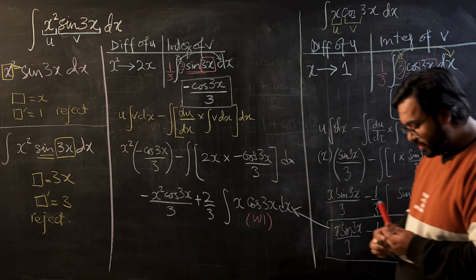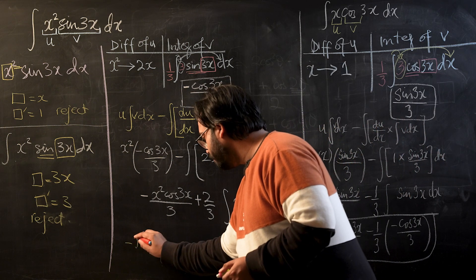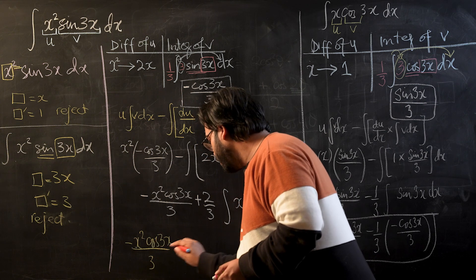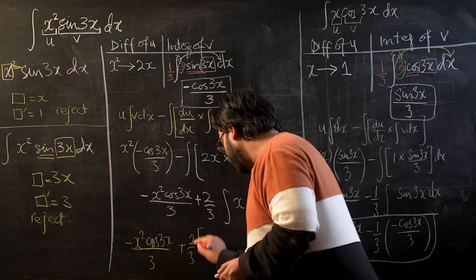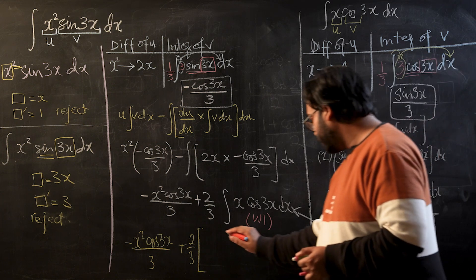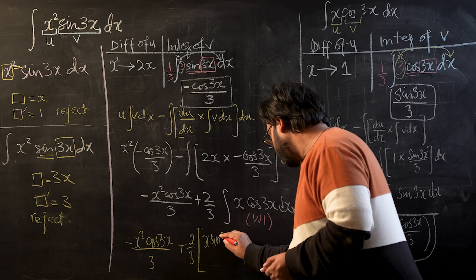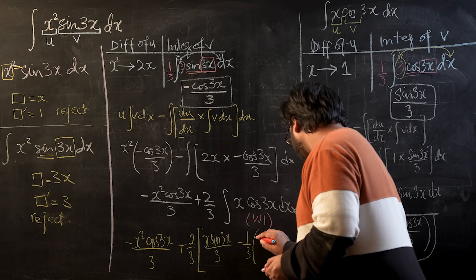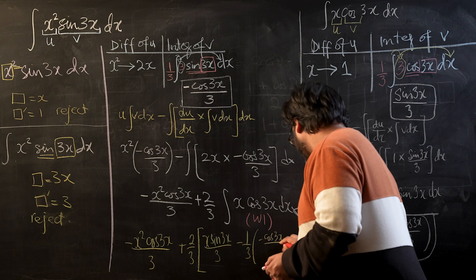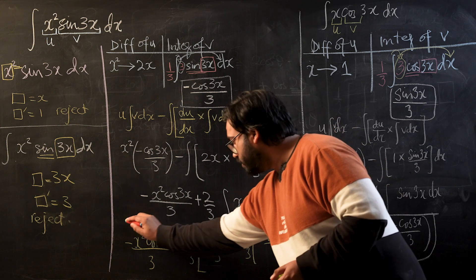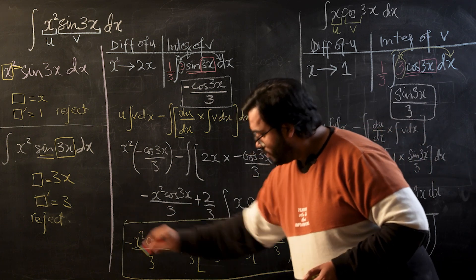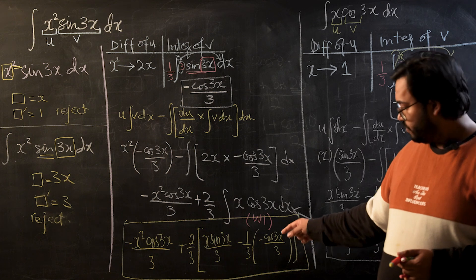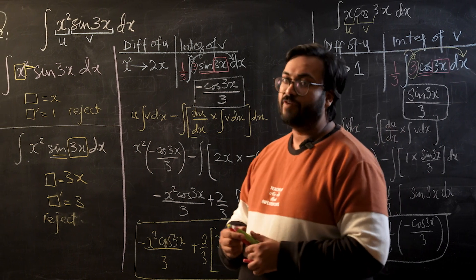Placing this result back into the main expression, we get the final answer: negative x² cos(3x)/3, plus (2/3) times [x·sine(3x)/3 + cos(3x)/9], plus the constant of integration C. We have now solved all the integrals. If limits are required, this is the point where you introduce the upper and lower limits to find the definite integral.